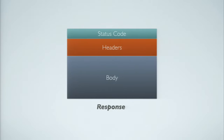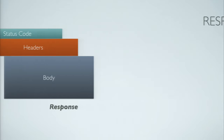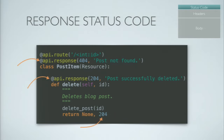Moving on to the response object: the status can be documented by adding an api.response decorator to either the resource class — if it applies to every endpoint — or to specific methods. At the end, to return a particular status code from the API, all you need to do is return a second value from the method. That's a Flask convention — if it's a number, it becomes the actual HTTP status code.